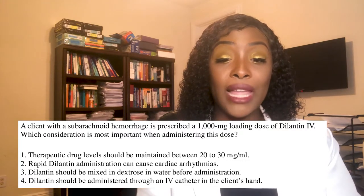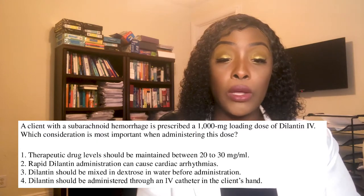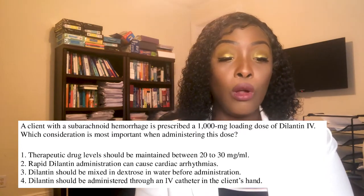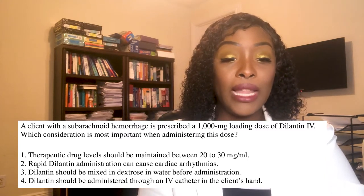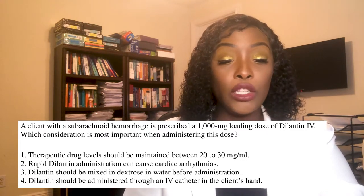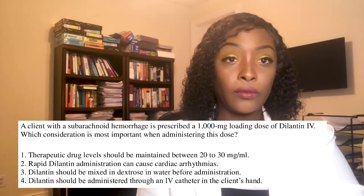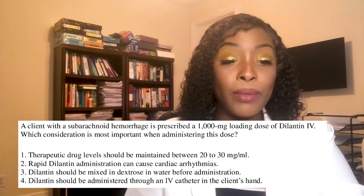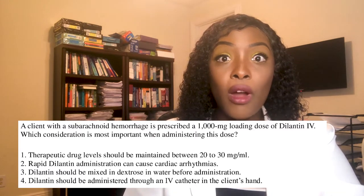Number two: a client with a subarachnoid hemorrhage is prescribed a 1,000 mg loading dose of Dilantin IV. Which consideration is important when administering this dose? A) The therapeutic level should be maintained between 20 and 30. B) Rapid Dilantin administration can cause cardiac arrhythmias. C) Dilantin should be mixed in dextrose in water before administration. D) Dilantin should be administered through an IV catheter in the client's hand.